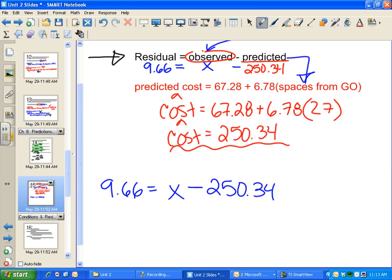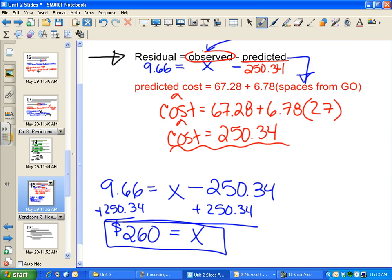Let's just add 250.34 to both sides. We find that x, our actual cost, is $260. So we can use our knowledge of residuals to work backwards.